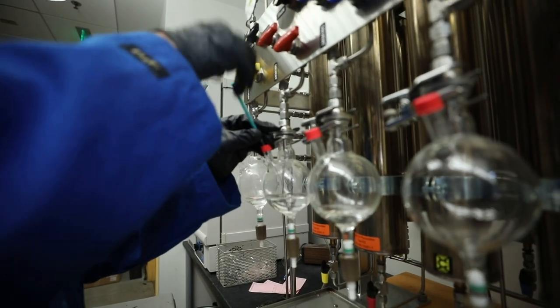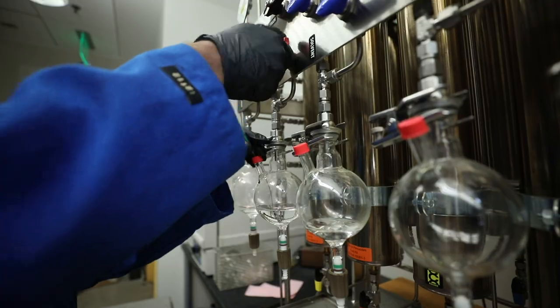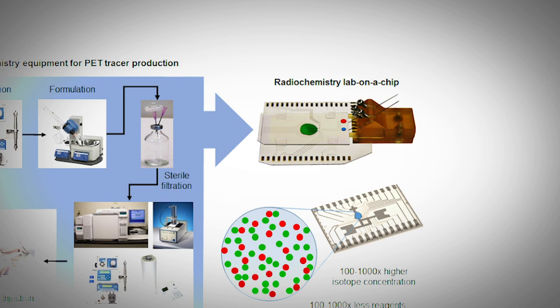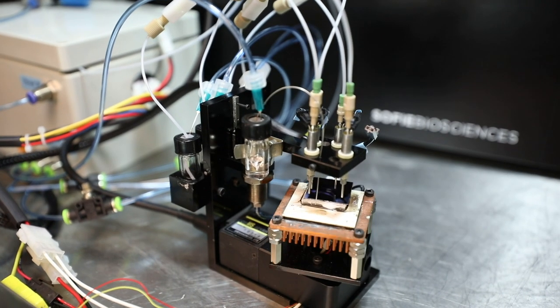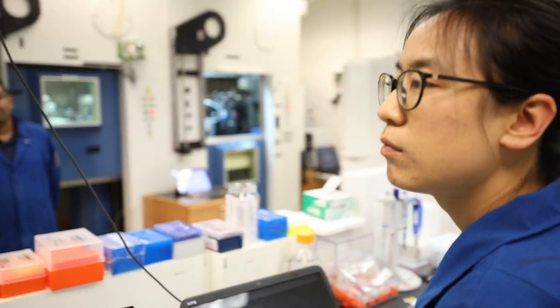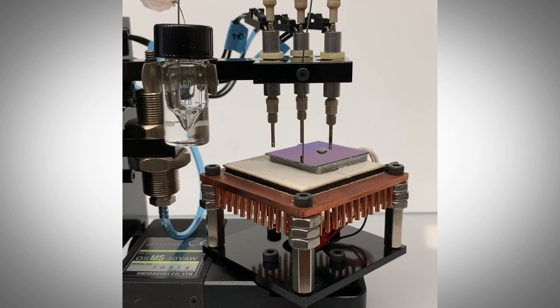Another technology we've been exploring is the use of microfluidics in radiochemistry. Microfluidic devices are designed to handle very small volumes of liquid for different applications such as chemical synthesis. We developed microfluidic devices that can perform the radiochemical reactions to synthesize an imaging probe in 1 to 10 microliter volumes, and this is in comparison to the milliliter volumes of traditional radiochemistry.